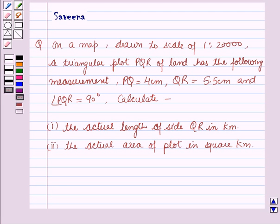Hello all and welcome to the session. Today the question is: on a map drawn to a scale of 1 is to 20,000, a triangular plot PQR of land has the following measurements — PQ is equal to 4 cm, QR is equal to 5.5 cm, and angle PQR is equal to 90 degrees. Calculate: first part, the actual length of the site QR in kilometers; second part, the actual area of the plot in square kilometers.